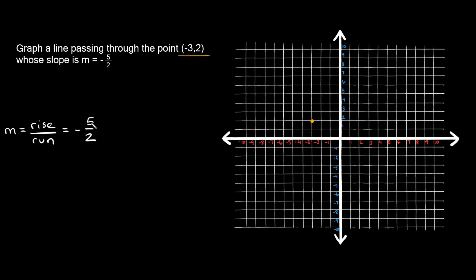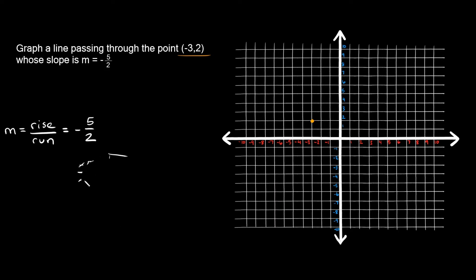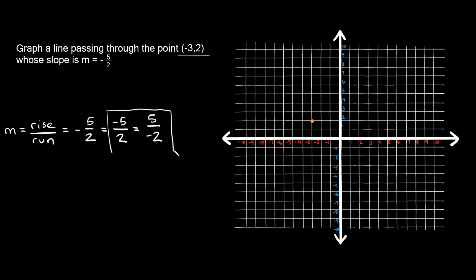Now, where do you apply this negative sign — top or bottom? You can't put it in both, because negative 5 over negative 2 would cancel to positive 5 over 2, which is not the same as negative 5 over 2. So you either use negative 5 over positive 2, or positive 5 over negative 2. Either one will work and give you the same answer.